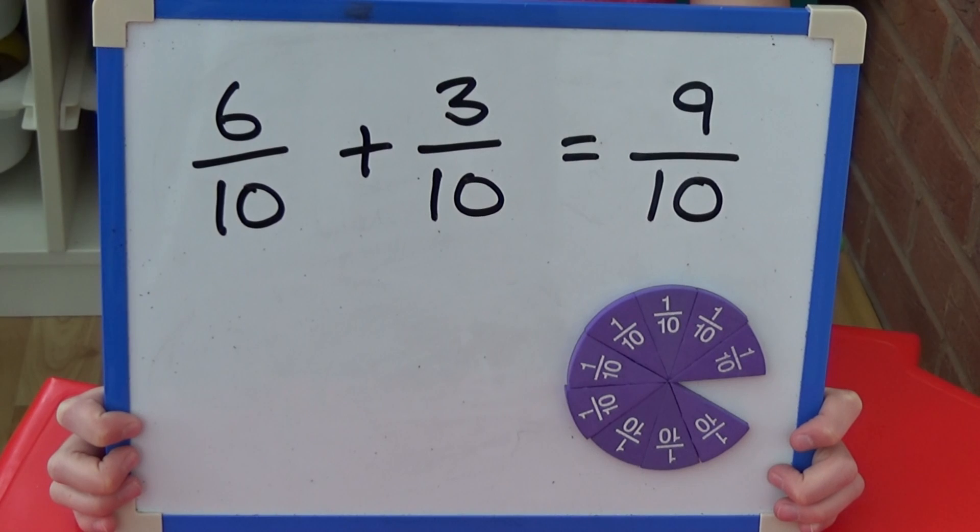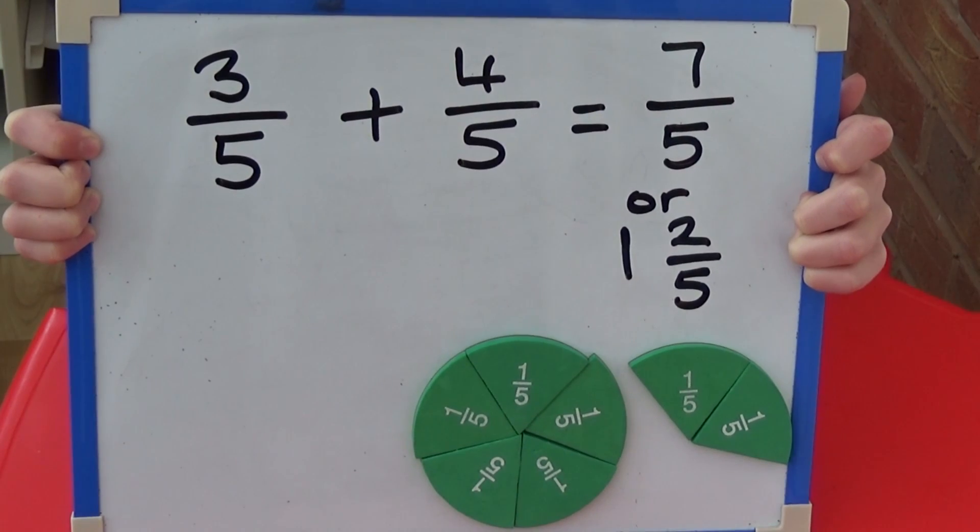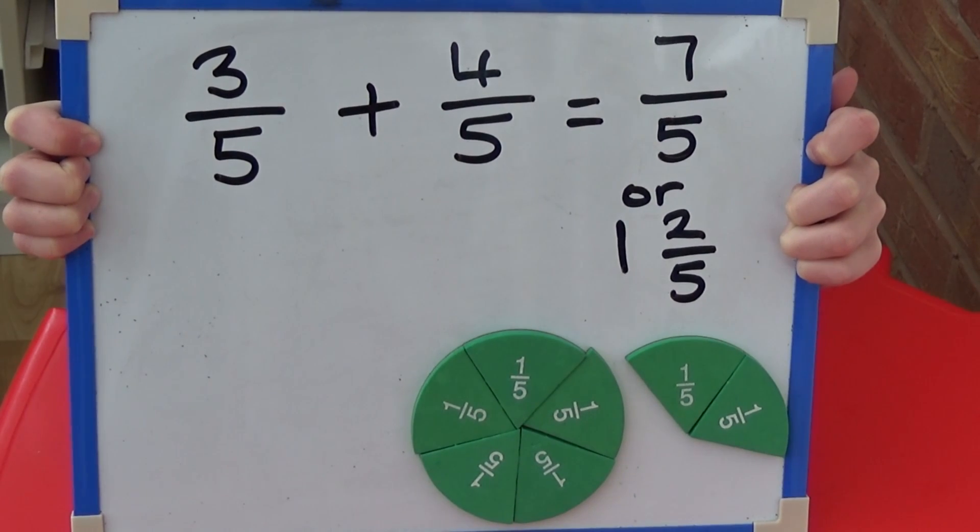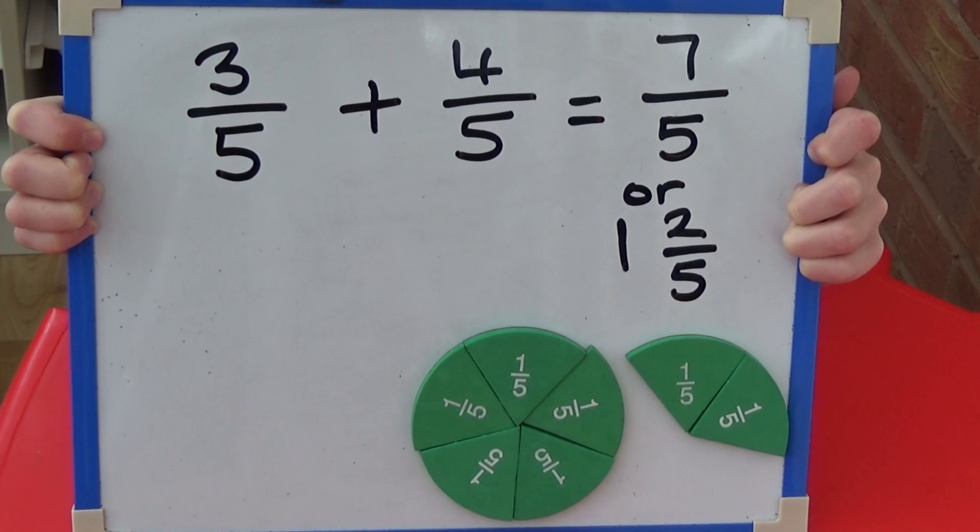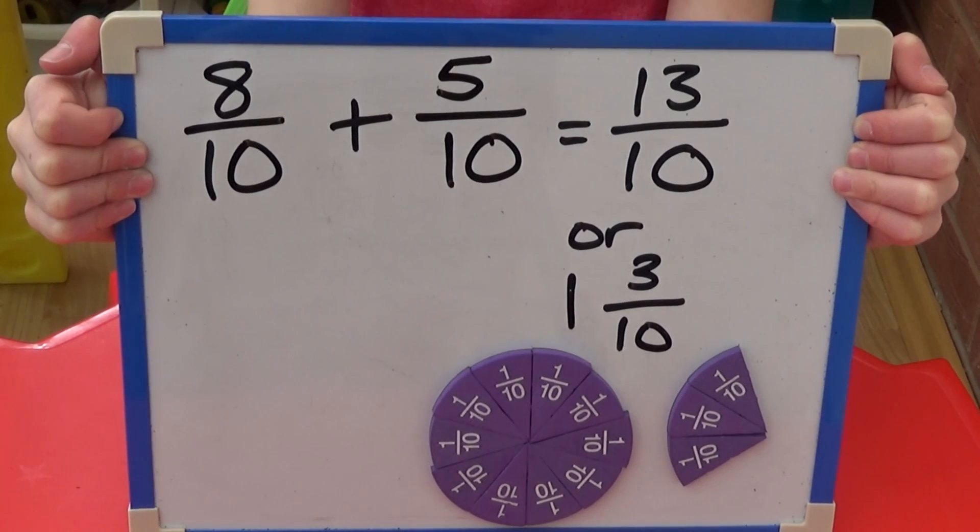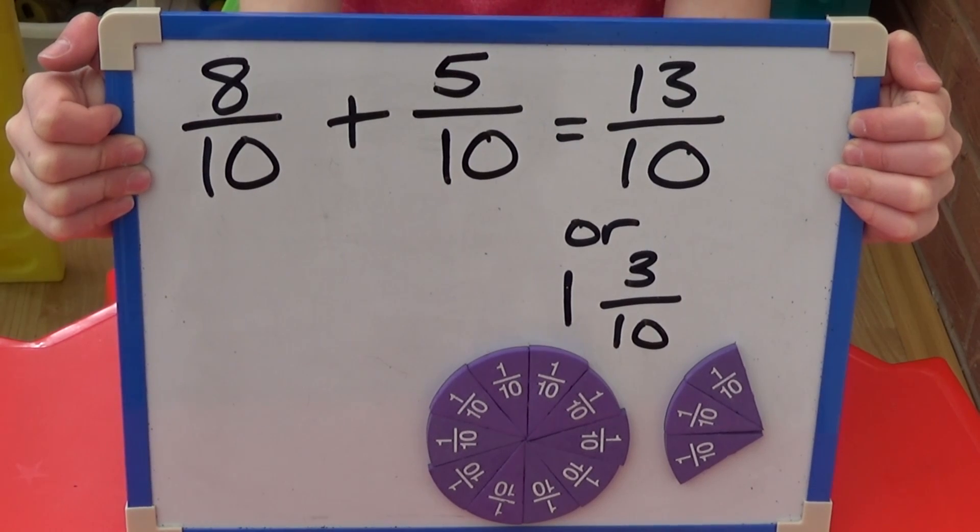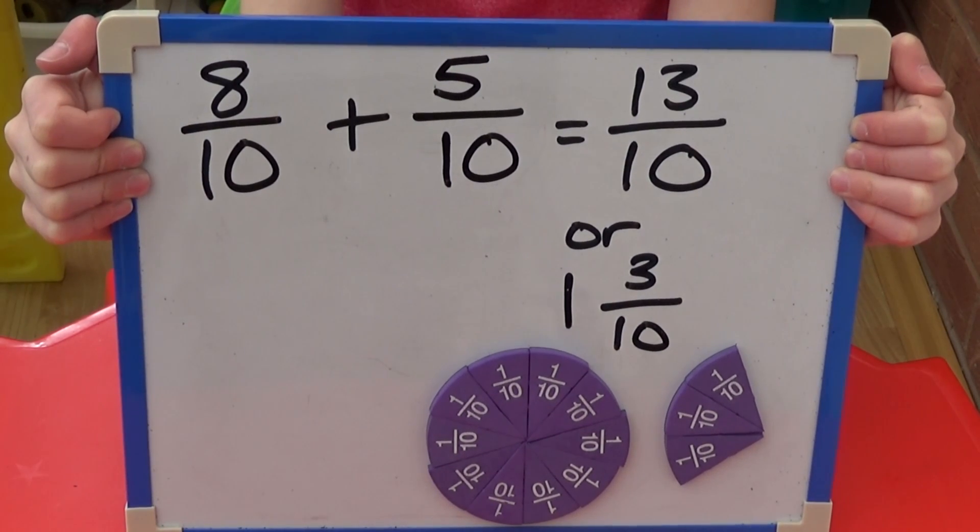Six tenths add three tenths equals nine tenths. Three fifths add four fifths equals seven fifths or one and two fifths. Eight tenths and five tenths equals thirteen tenths or one and three tenths.